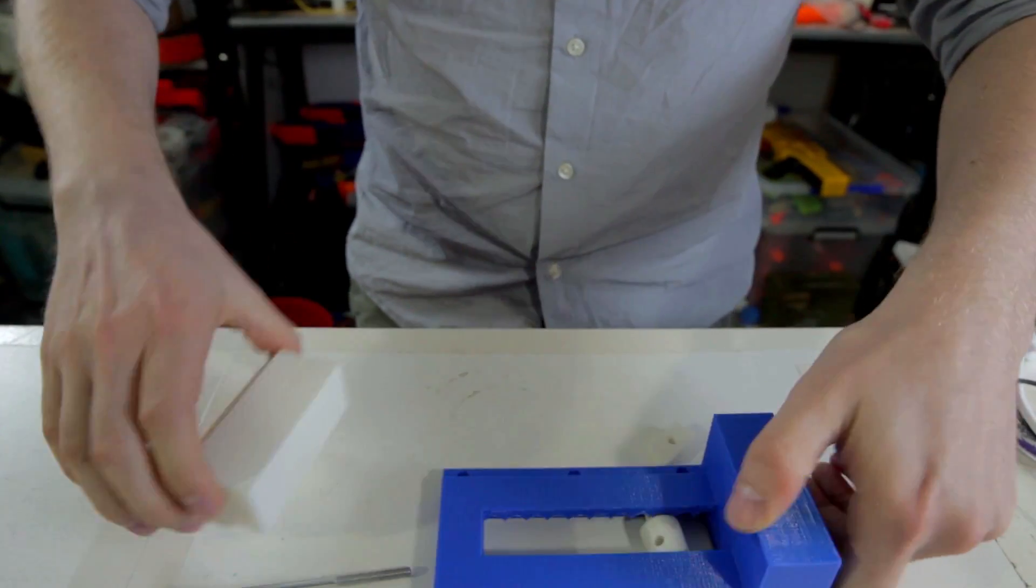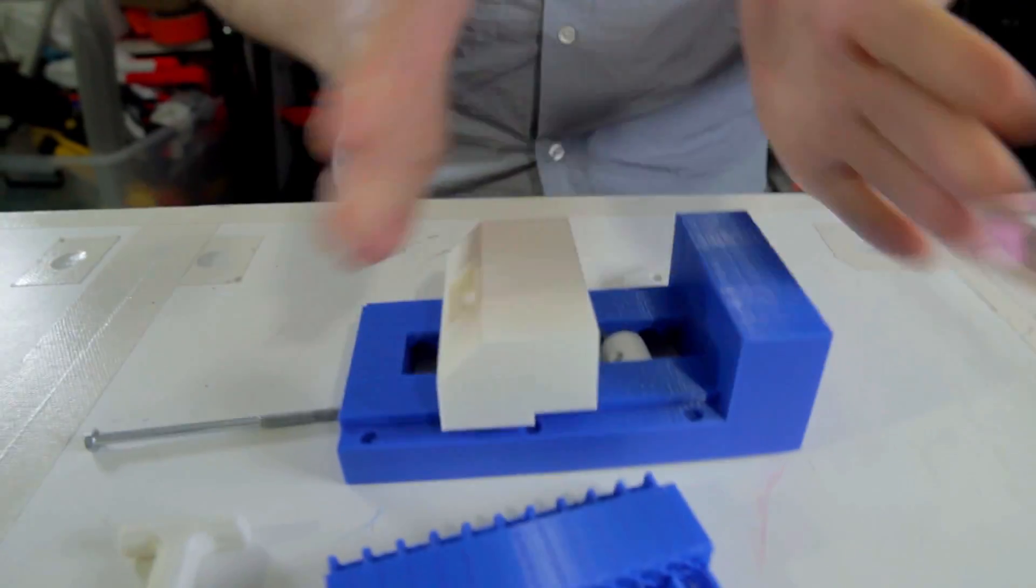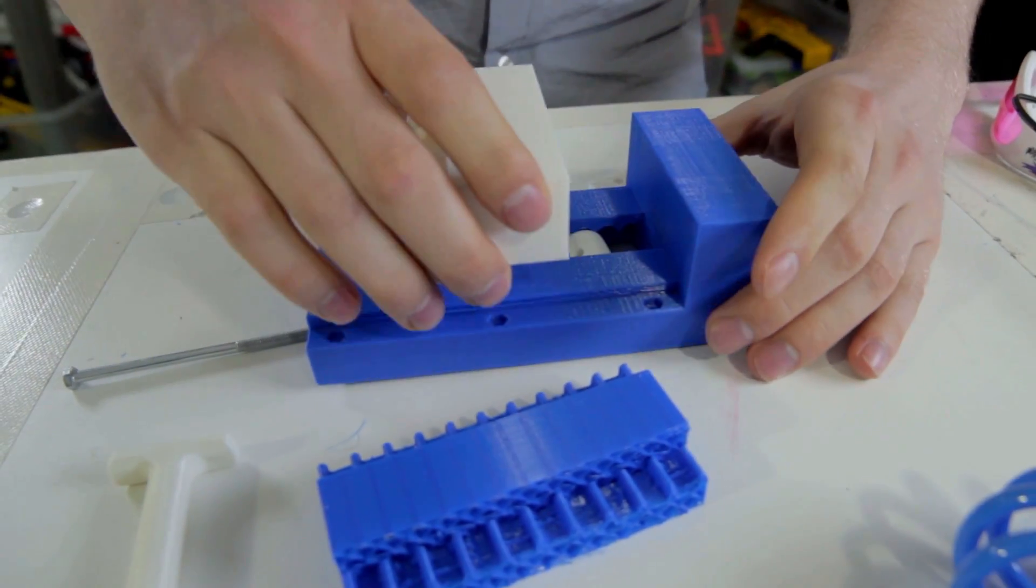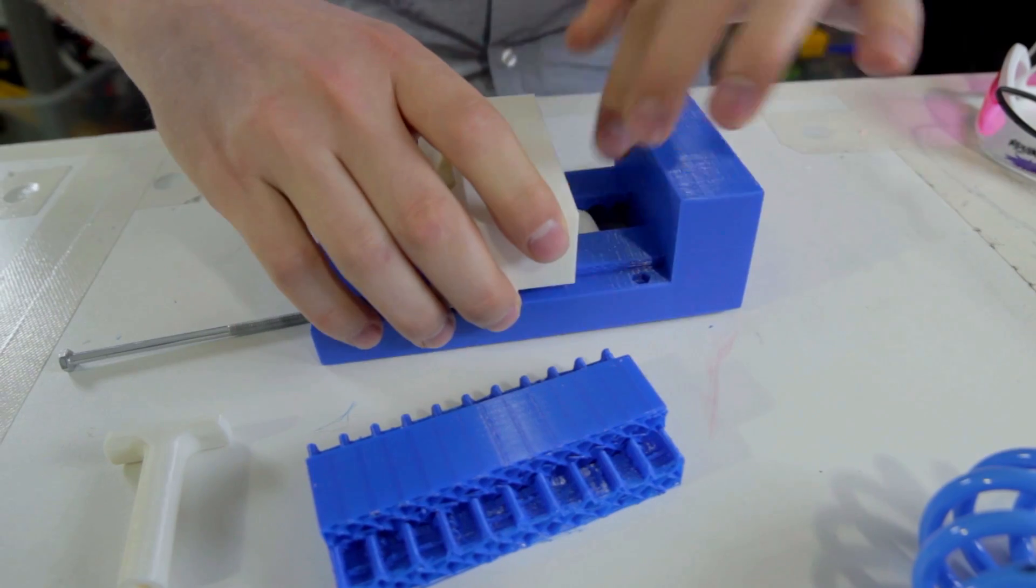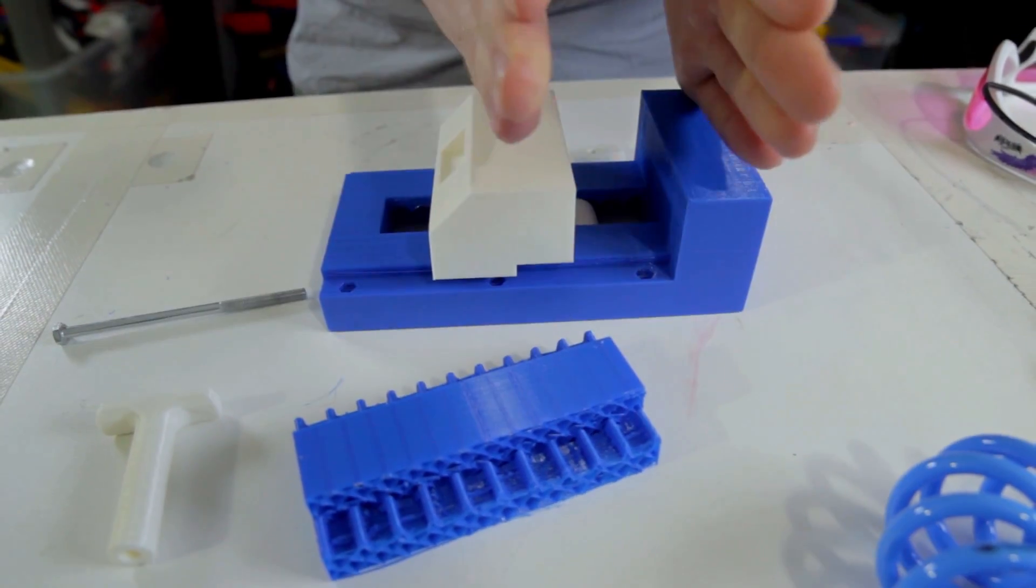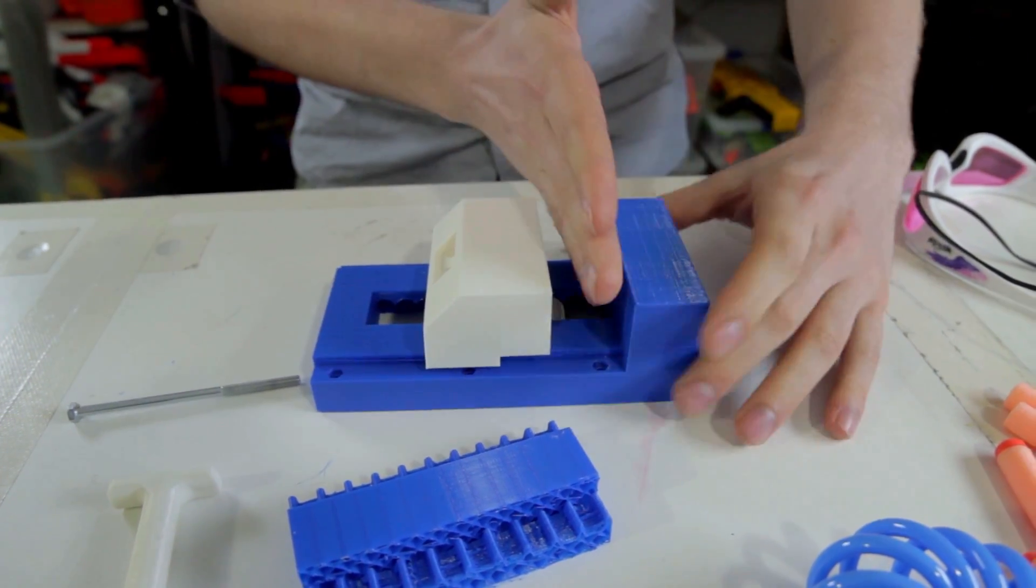And then when you tighten down on this bolt, it pulls the jaw in and down towards that pivot point. And so what that does is it pulls the jaw closed, but it also pulls the jaw down onto the track. And so what that means, you don't get any rise, so the jaws will remain parallel.